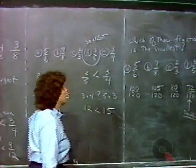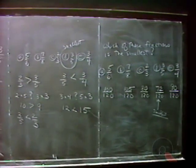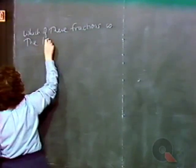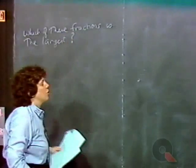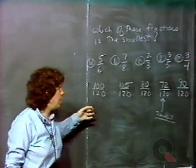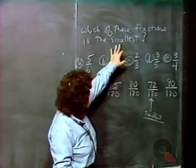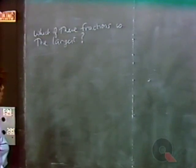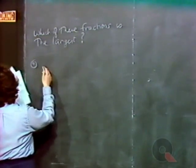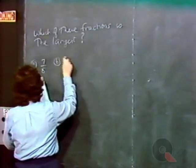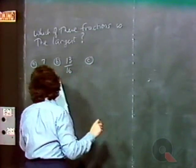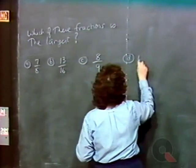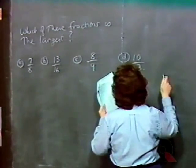Let's try another example. Which of these fractions is the largest? — and please pay attention to the question. It would be a shame to do all this work and give the smallest when they ask for the largest. The choices are: A: seven-eighths, B: thirteen-sixteenths, C: eight-ninths, D: ten-thirteenths, and E: nine-tenths.